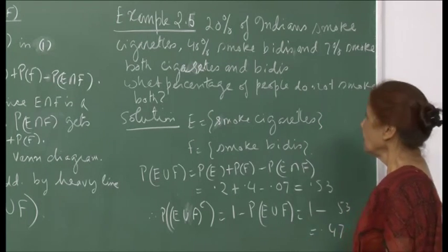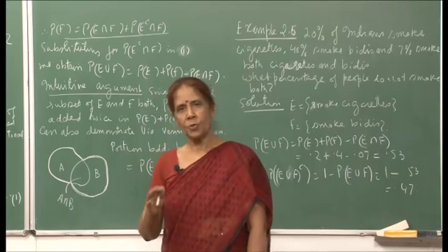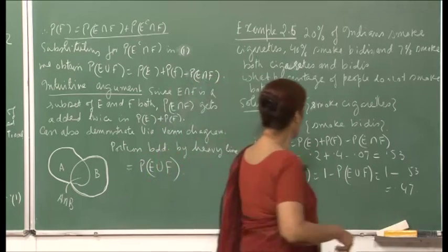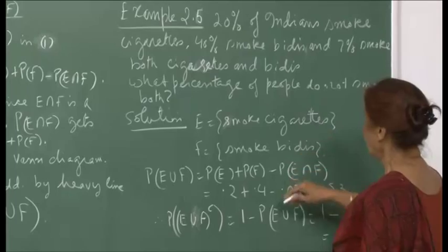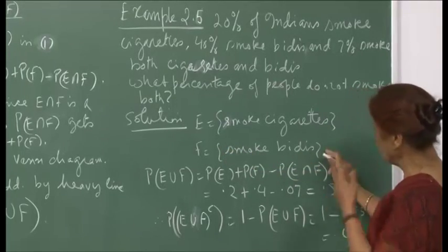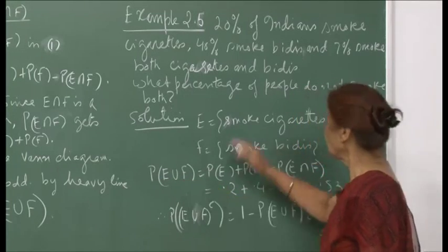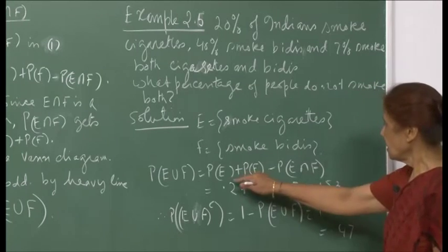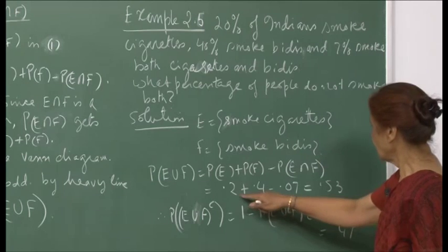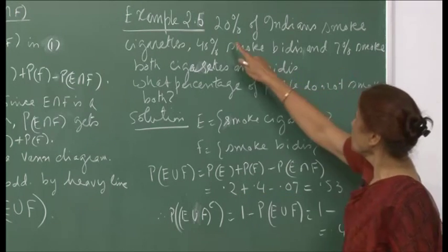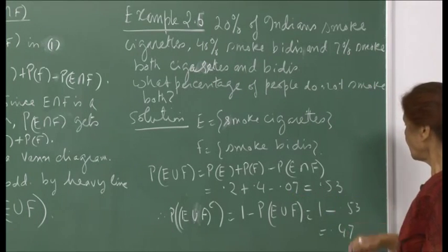Let E be the set of people who smoke cigarettes and F the set who smoke bidis. P(E ∪ F) = P(E) + P(F) − P(E ∩ F) = 0.2 + 0.4 − 0.07 = 0.53.